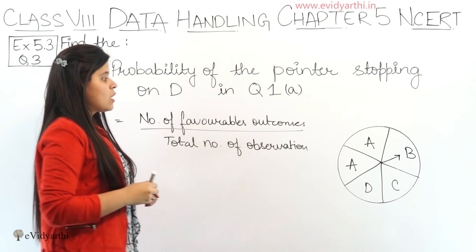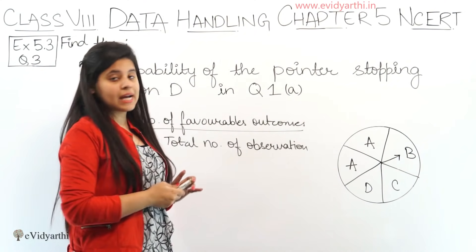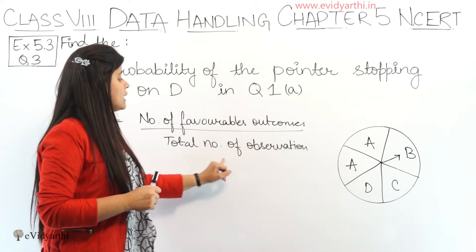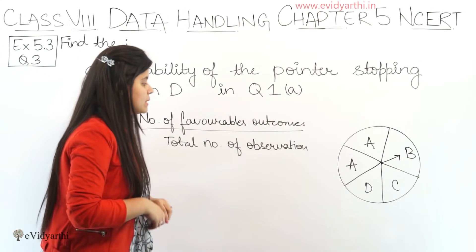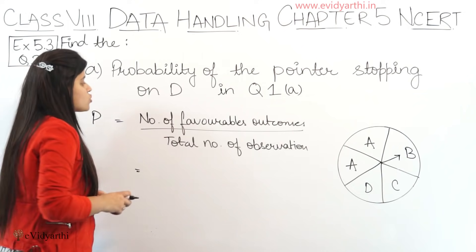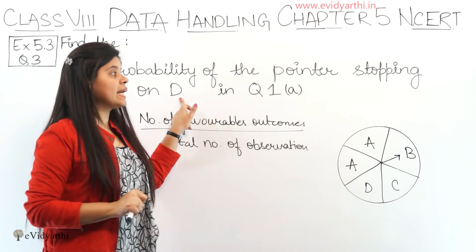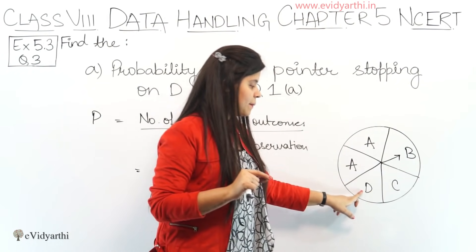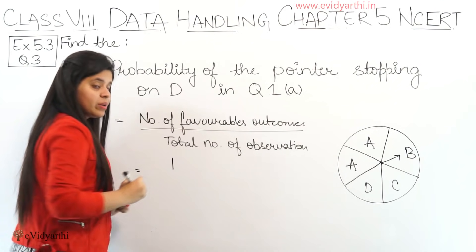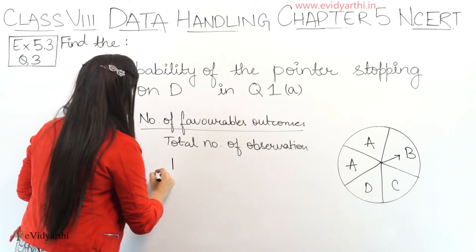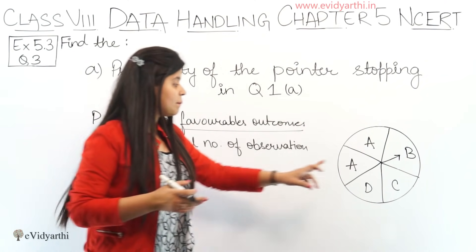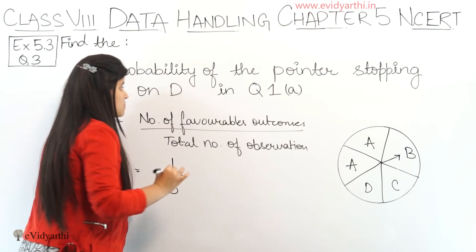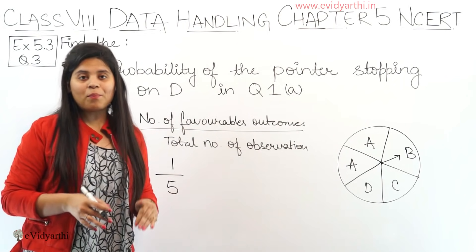Now, what are favourable outcomes? Here we have to find the outcome we need. So what are the favourable outcomes for D? D appears only once, so the favourable outcome is 1. And the total number of observations here — counting: 1, 2, 3, 4, 5 — total are 5. So the probability of coming to D is 1 upon 5.